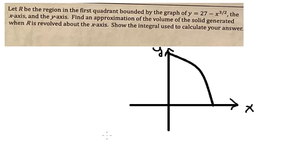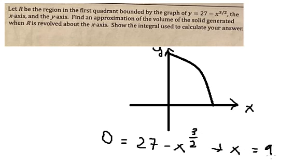So we set 0 = 27 - x^(3/2). We calculate this and get x = 9. This is the point at x = 9 here.